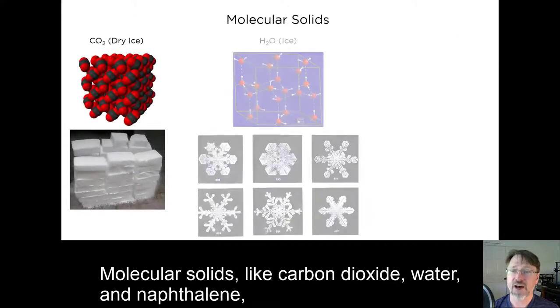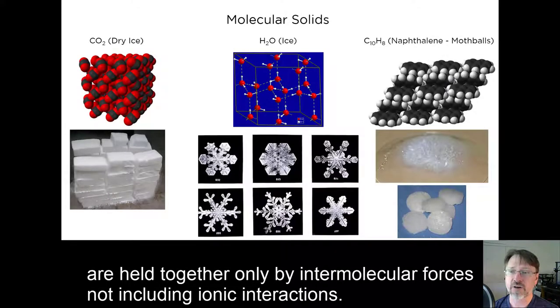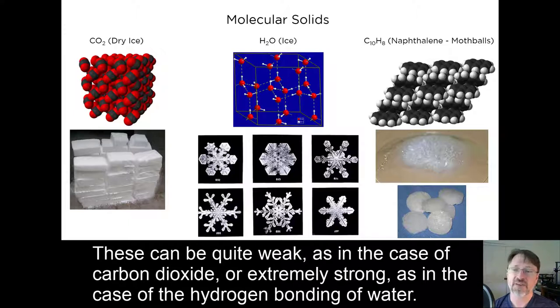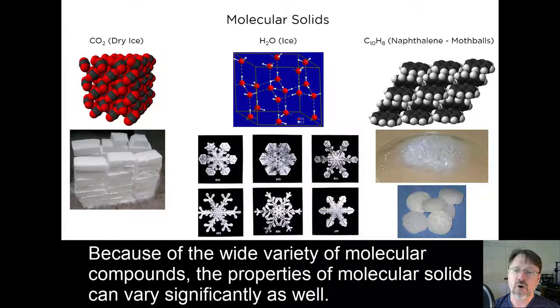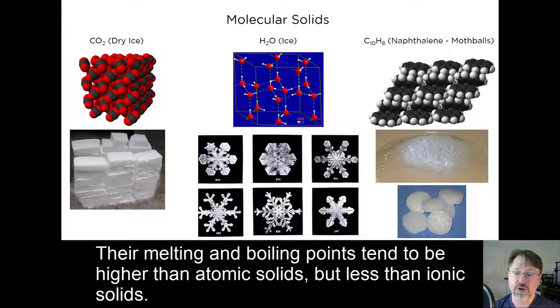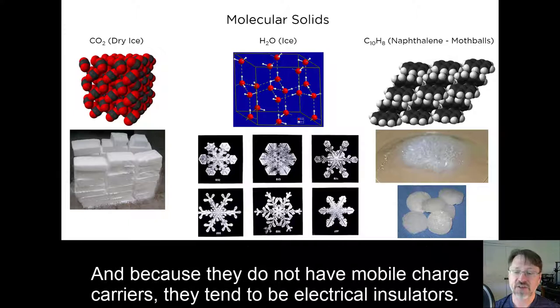Molecular solids like carbon dioxide, water, and naphthalene are held together only by intermolecular forces, not including ionic interactions. These can be quite weak, as in the case of carbon dioxide, or extremely strong, as in the case of hydrogen bonding of water. Because of the wide variety of molecular compounds, the properties of molecular solids can vary significantly as well. Their melting and boiling points tend to be higher than atomic solids but less than ionic solids. And because they do not have mobile charge carriers, they tend to be electrical insulators.